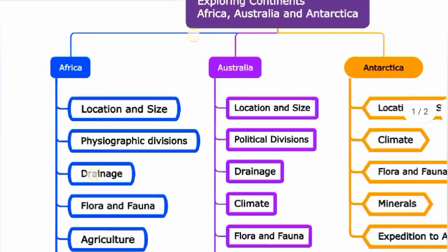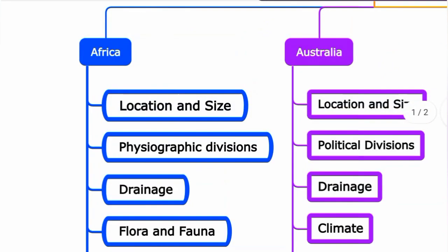The mind map for Unit 7 starts with Africa. First is Africa's location — it is the second largest and second most populous continent after Asia. We will discuss its size in kilometers. Africa is also known by the nicknames 'Dark Continent' and 'Mother Continent.'